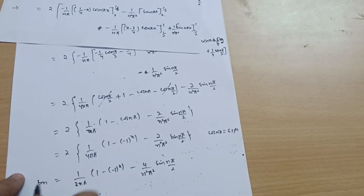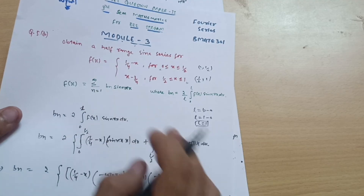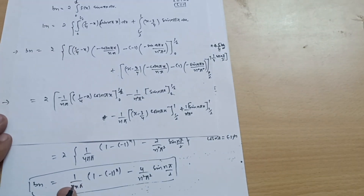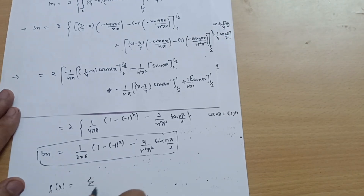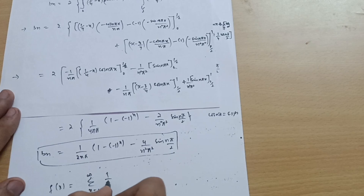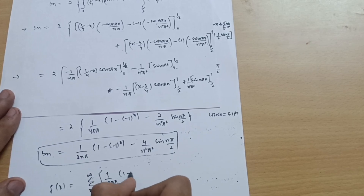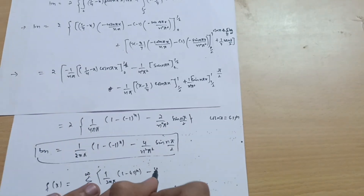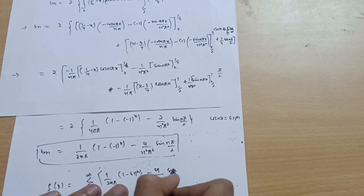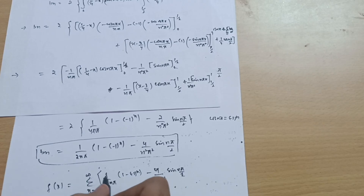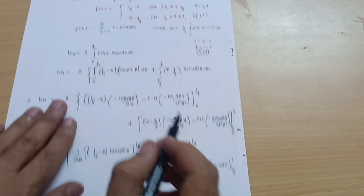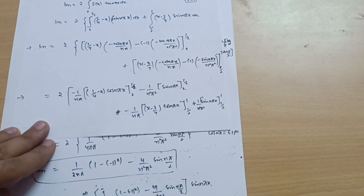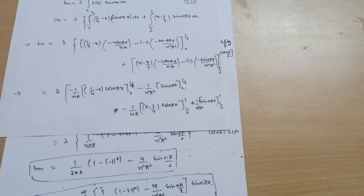Substituting the bn value into the Fourier series: f(x) = Σ(n=1 to ∞) [(1/2nπ)·(1 − (−1)ⁿ) − (4/n²π²)·sin(nπ/2)] · sin(nπx). This is the complete half range Fourier sine series solution. If you have any doubts, you can ask in the comment section — thanks for watching.